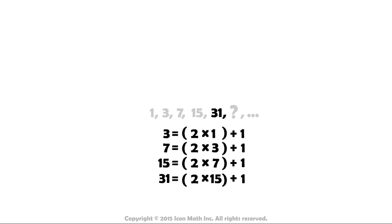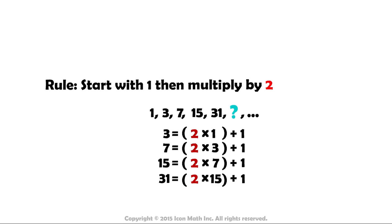So each number in this pattern is 2 times the previous number plus 1. In other words, the rule of the pattern 1, 3, 7, 15, 31 is start with 1, then multiply by 2 and add 1 to get the next number.